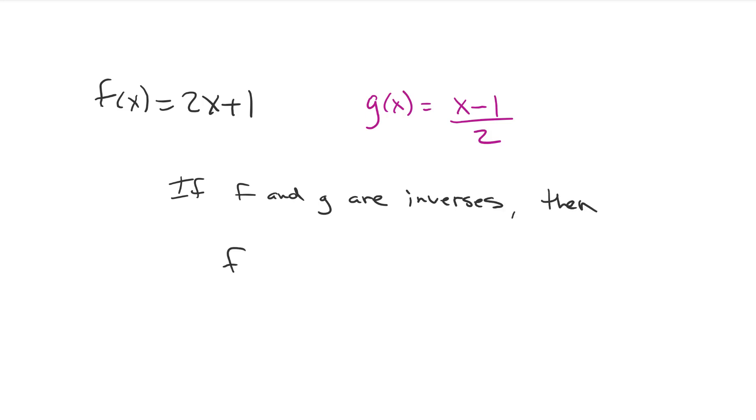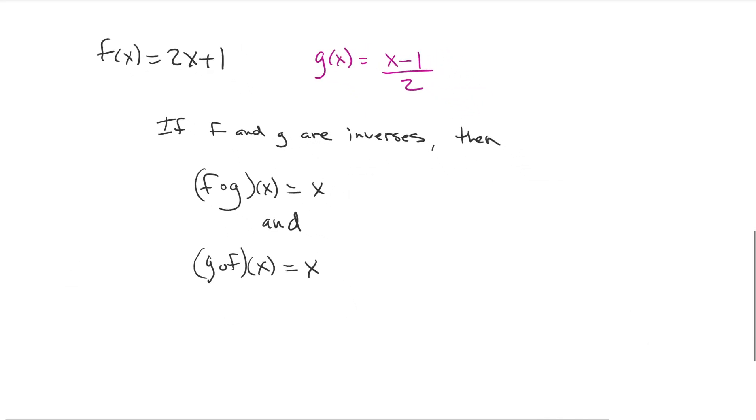Now if things are inverses of each other, if f and g are inverses of each other, then f of g of x is equal to x and g of f of x is equal to x. There's a big reason, because an inverse is just the opposite process. Saying if you do one process and then you do the opposite, you're going to end up right back at your input, which is x.